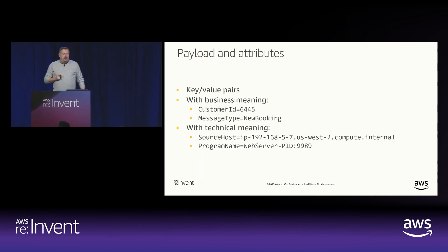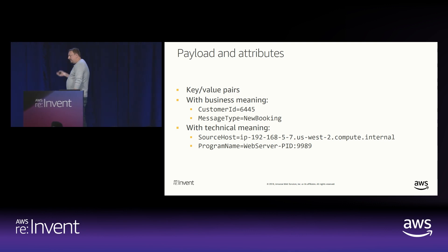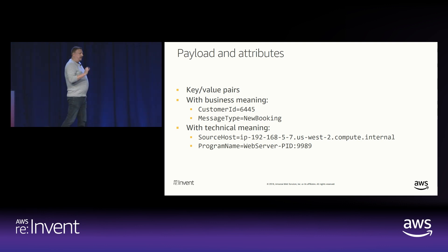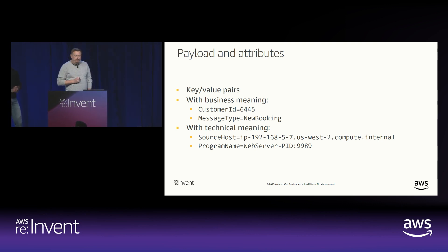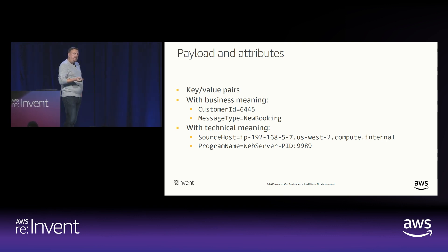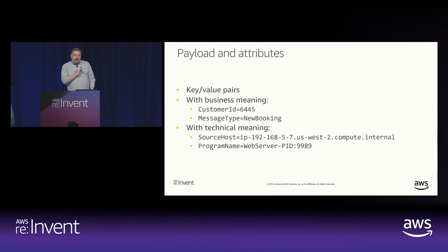You can also send attributes along with your messages. Attributes are just key-value pairs you attach to your message. They can have a business or technical meaning. You may ask yourself: for a particular piece of data, should it go into the payload or as an attribute? The payload can get encrypted, but attributes are never encrypted. Attributes can be used for filtering messages and routing them between your services. That distinction — attributes versus message payload — is how you decide where a piece of information belongs.